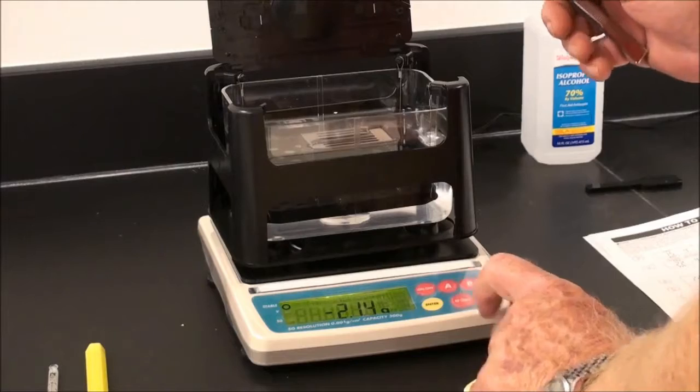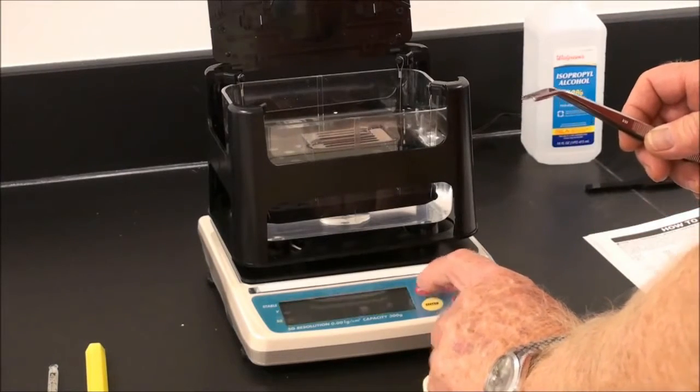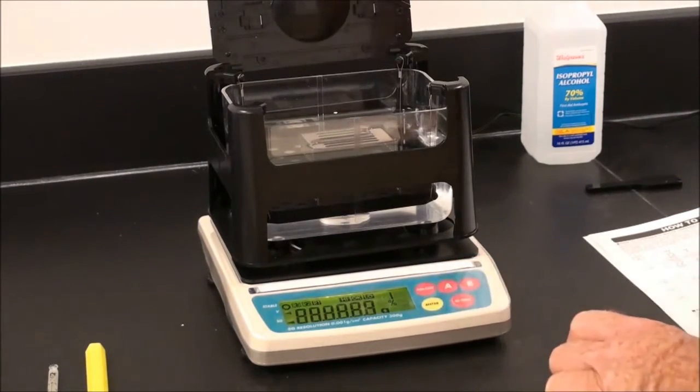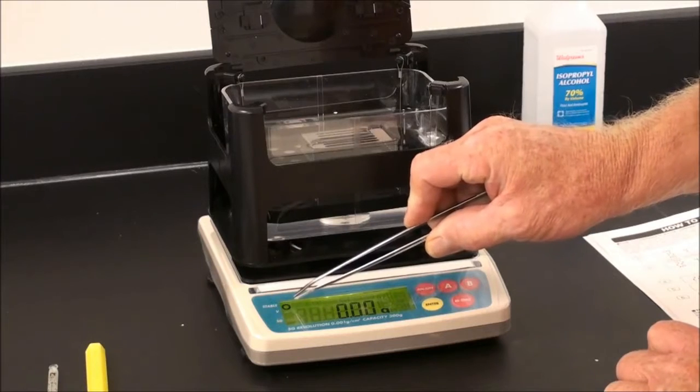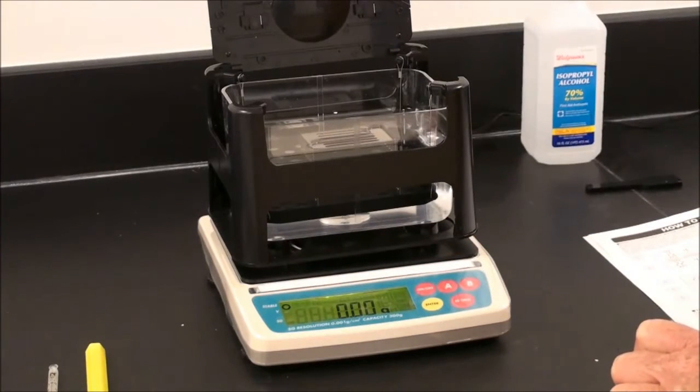If you don't get a good zero, simply turn off and back on and allow the balance to re-zero. The stability mark indicates the balance is ready for operation.